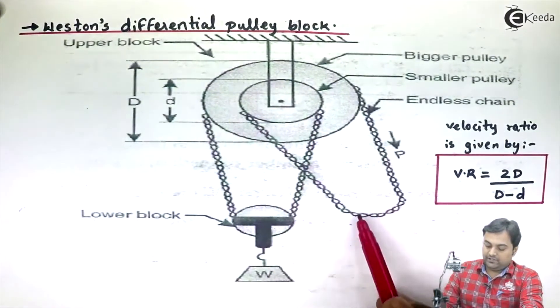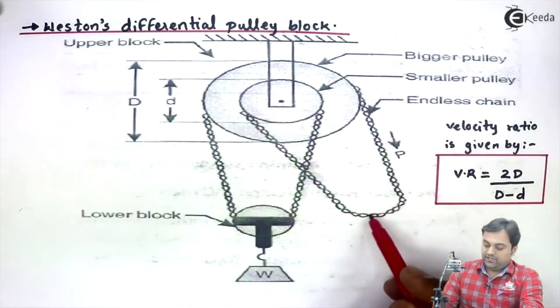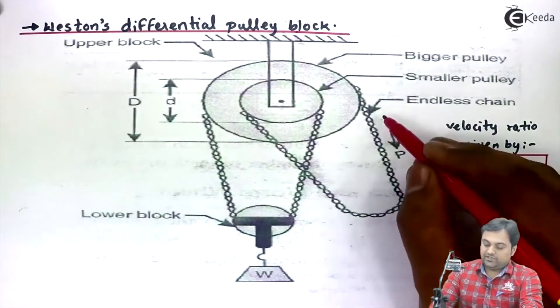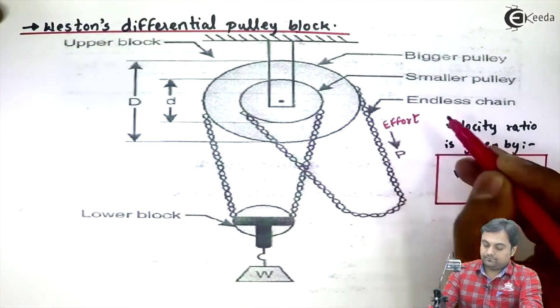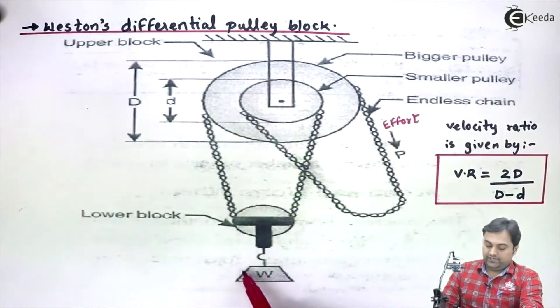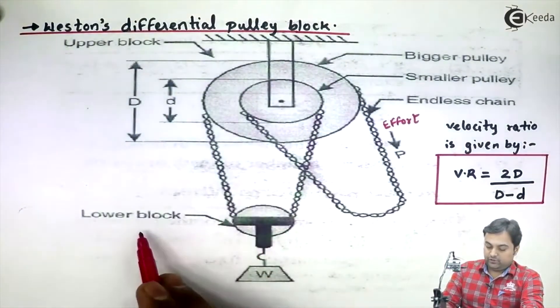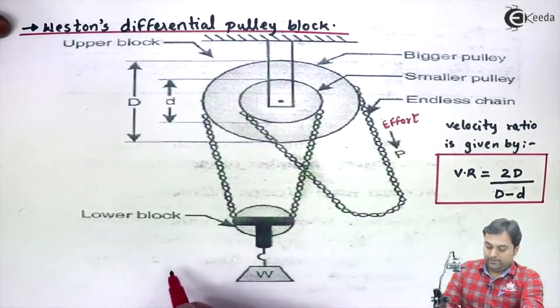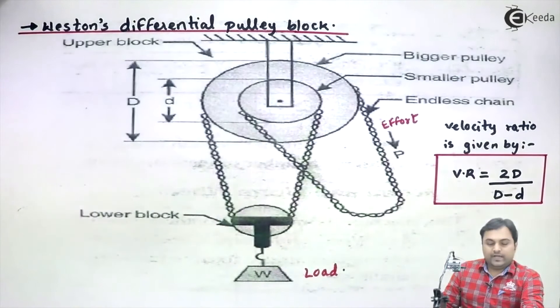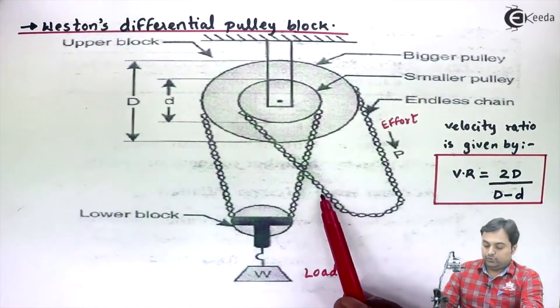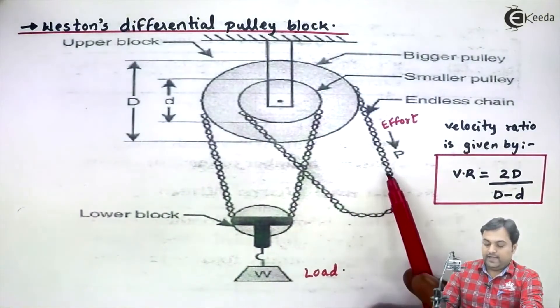At one of the chains, we are applying P, which is nothing but effort. On the other end, we have one more chain to which we have connected the load through the lower block. So we can see that two different chains are connected to load and effort.